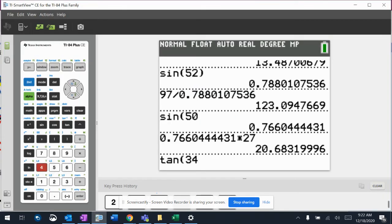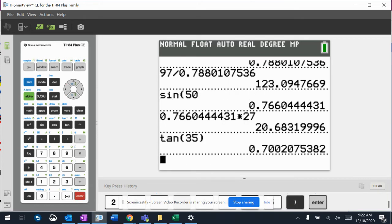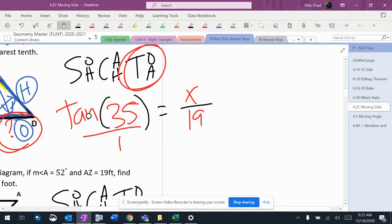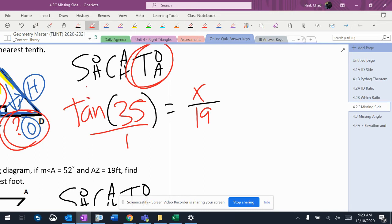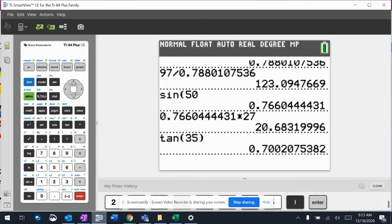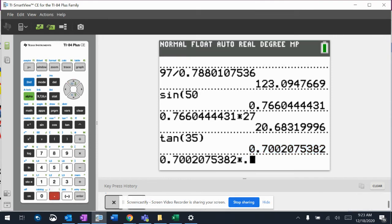So tangent 35, not 34, 0.700. And when I cross multiply, I'm going to get x equals, and again, this is the nice one, because the decimal multiplies by the number.